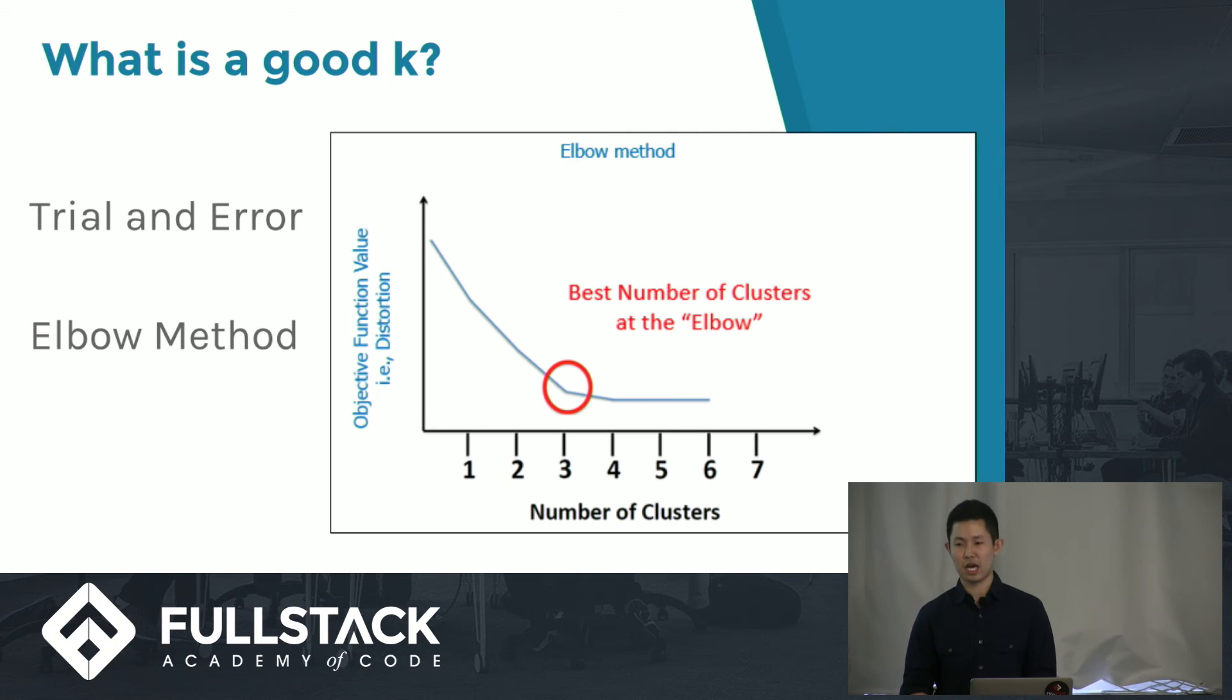One method to choose a good K value is called the elbow method. Here you can see at the bottom there's a plot. It plots the number of clusters K to the average distance to the centroid.